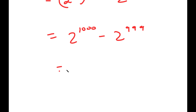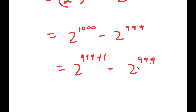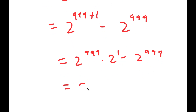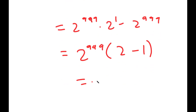Now to solve this, I'm going to write 2 to the power of 1000 as 2 to the power of 999 plus 1. So I get 2 to the power of 999 times 2 to the power of 1, minus 2 to the power of 999, which is equal to 2 to the power of 999 times 2 minus 1, which is equal to 2 to the power of 999.